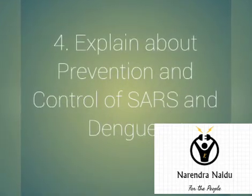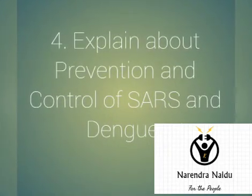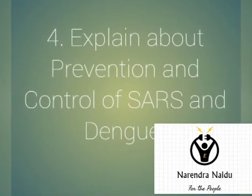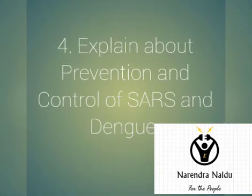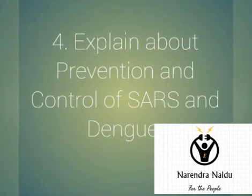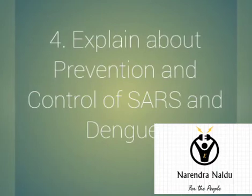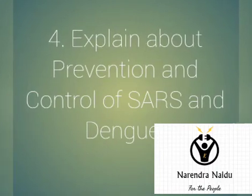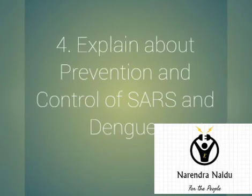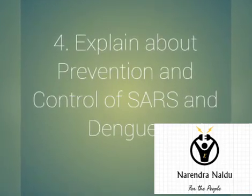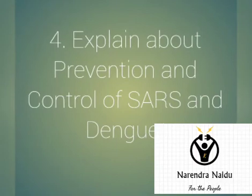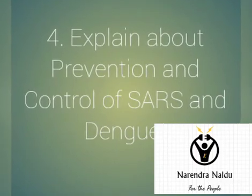The last question is: explain about prevention and control of SARS and Dengue. SARS means severe acute respiratory syndrome — corona is one type of this SARS virus. You have to answer about SARS and Dengue regarding the signs and symptoms, transmission, diagnosis, treatment, and prevention of severe acute respiratory syndrome and Dengue.